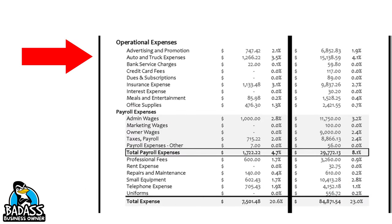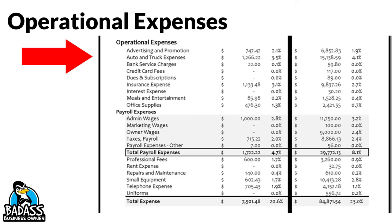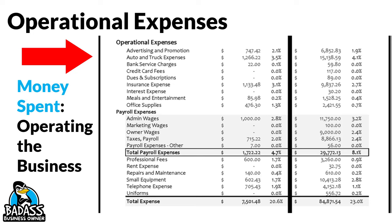The next big section is the operational expenses, and this is going to have a lot of stuff under it. It's basically going to be all the other operational expenses to run the business — whether it's advertising, repairs and maintenance to the truck or your equipment, credit cards, insurance, payroll. You'll also have a payroll service in many cases, with all the fees and taxes you have to collect. Rent, small equipment, uniforms — it's basically a catch-all for everything else that is not part of your cost of goods.